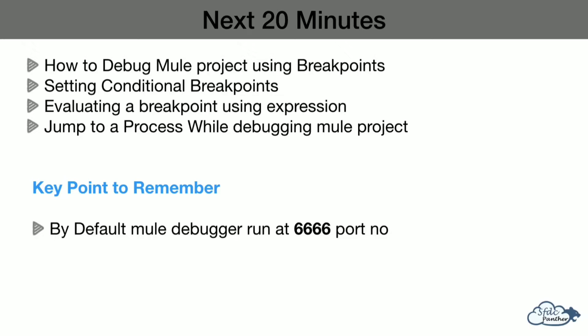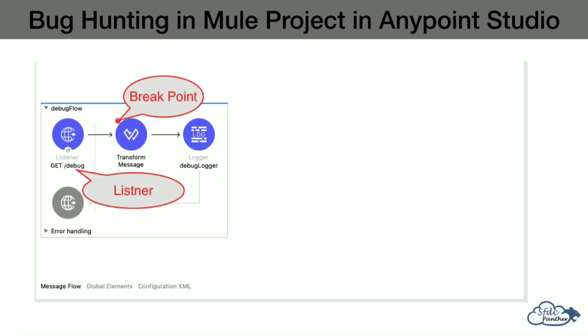Before we go ahead, one important point to remember: by default the Mule debugger runs at port 6666. If you are not able to run your debug on the same port, that means your machine is already using this port and you can change it — we will see how to change that.